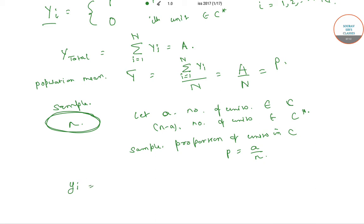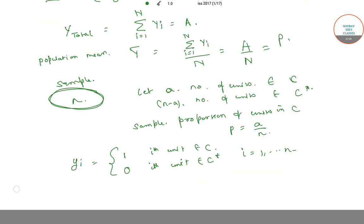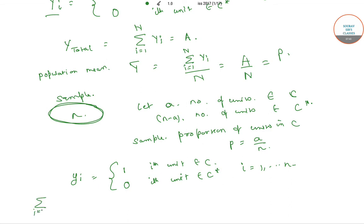Suppose small yi is a variable which equals 1 if the ith unit belongs to C and equals 0 if the ith unit belongs to C star, where i runs from 1 to small n. Therefore the summation of yi equals small a.